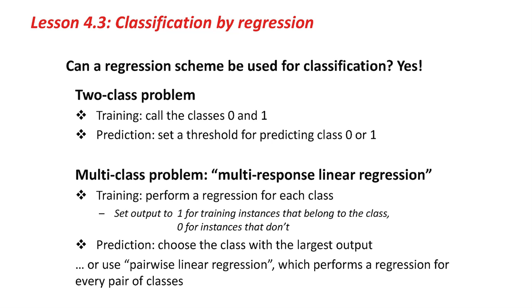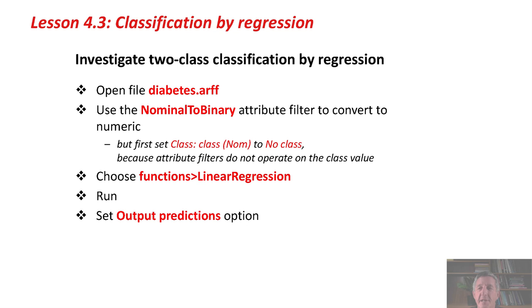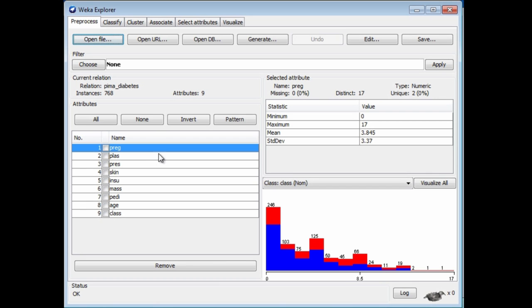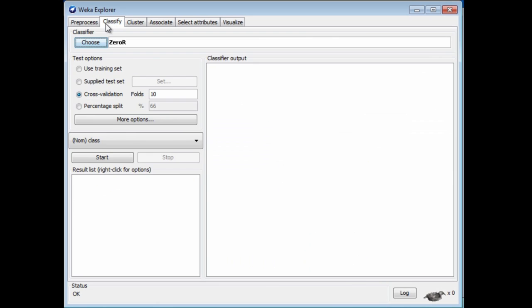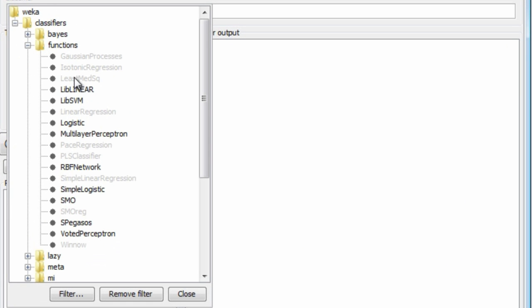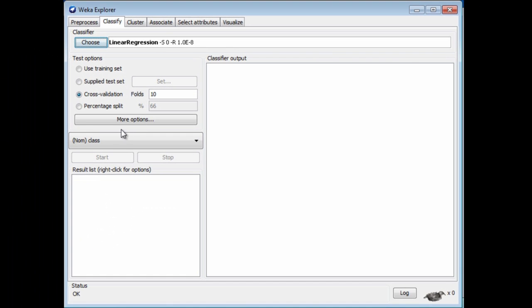We're going to work with a two-class problem. I'm going to open Diabetes, and then let's just try and apply regression to this. I'm going to try linear regression, and you see it's grayed out here. That means it's not applicable. I can actually select it, but I can't start it. It's not applicable because linear regression applies to a data set where the class is numeric, and we've got a data set where the class is nominal.